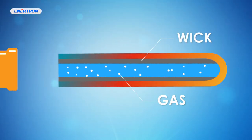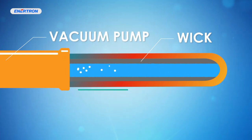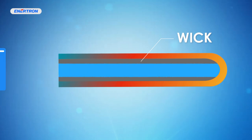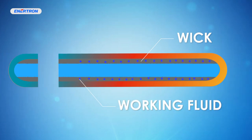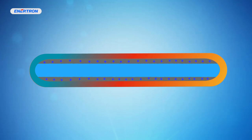Heat pipes are made by vacuuming and evacuating any air within the pipe. Afterwards, the pipe is charged with working fluid. This working fluid then evenly spreads into the wick structure within the pipe. Next the vacuum end is clamped and sealed and a heat pipe is formed.